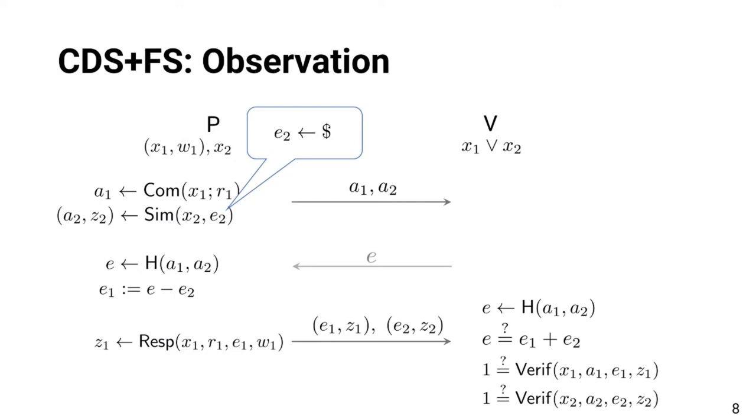Now we get back to the simple OR proof by the CDS-94 composition. We consider its non-interactive variant with the Fiat-Shamir technique. Recall that the challenge string used for simulation is chosen by the prover, and the verifier does not see how it is generated. Namely, the prover has full control over the challenge string. It is perfectly fine in the original CDS composition, but it can be troublesome in some extended cases as we explain later. Furthermore, the CDS composition has other limitations that we try to overcome in this work.